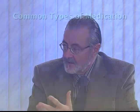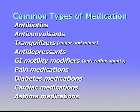The most common categories of medications used are antibiotics, anticonvulsants, tranquilizers — which break down into both major and minor categories — antidepressants, GI motility modifiers (also known as anti-reflux agents), pain medications, medications for diabetes, medications for the heart, and medications for asthma or chronic lung conditions.